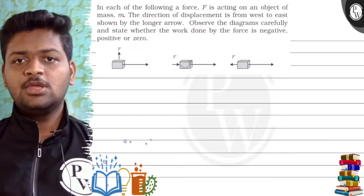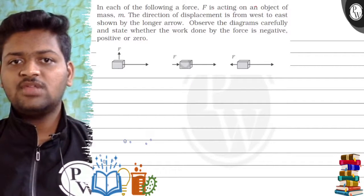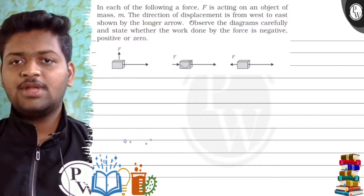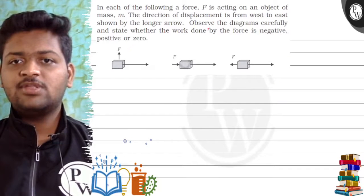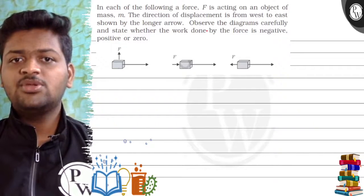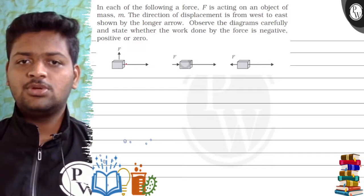Let's see this question. In each of the following, a force F is acting on an object of mass M. The direction of displacement is from west to east, shown by the longer arrow. Observe the diagrams carefully and state whether the work done by the force is negative, positive, or zero.